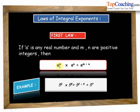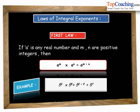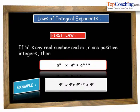If we have to multiply a to the power of m with a to the power of n, then their product is equal to a to the power of m plus n. We simply add the exponents.